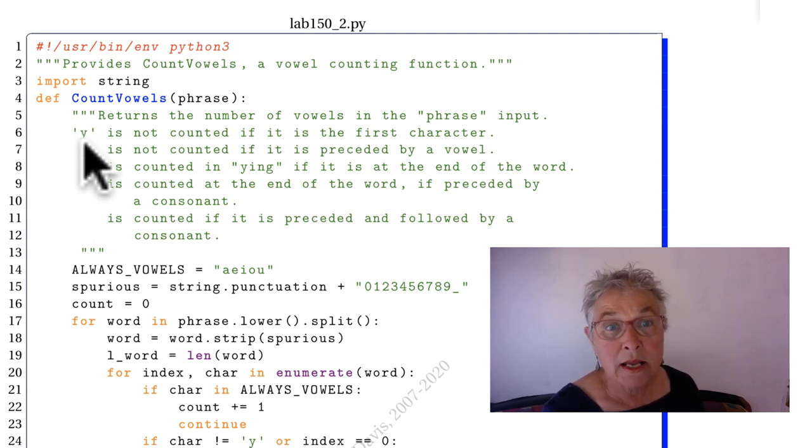We have that y is not counted if it is the first character. So that'll be the first piece of code that matches the spec. We see we have always vowels and I have them lowercase. And these are the spurious characters.